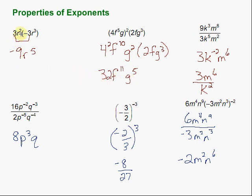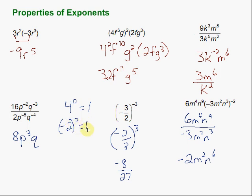Alright, so let's review the properties of exponents we looked at. If we're multiplying terms with the same base, we add the exponents. If we're taking a power to a power — like f to the fifth squared — we multiply those exponents. If we're dividing, we subtract the exponents from top to bottom. If we have a negative exponent, we flip it to the bottom to make it positive. And one other property we didn't cover in the examples: anything to the zero power is defined as 1 — so 4 to the zero power is 1, and negative 2 to the zero power is 1.